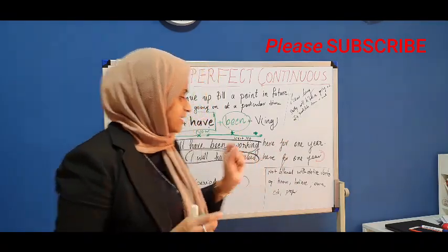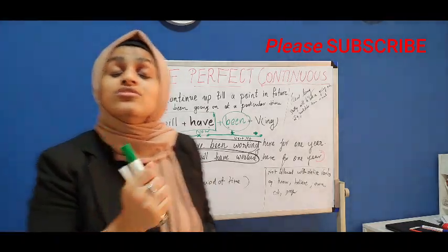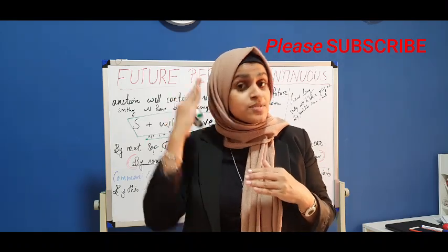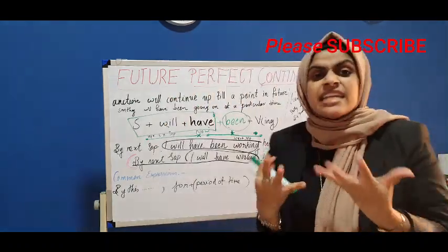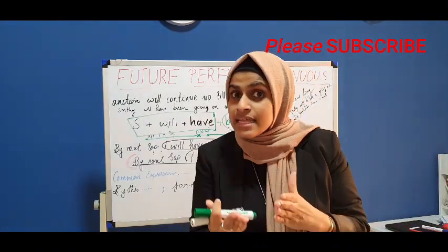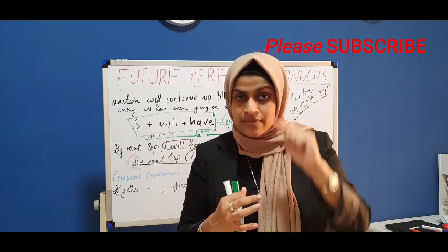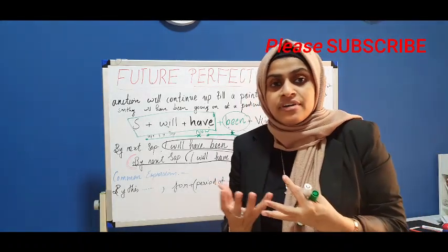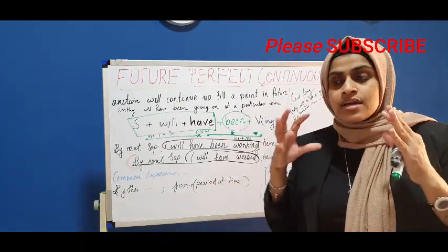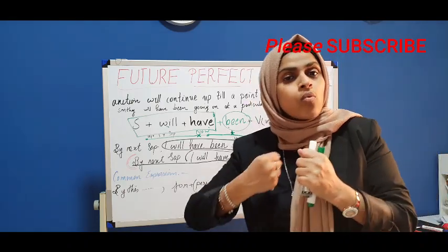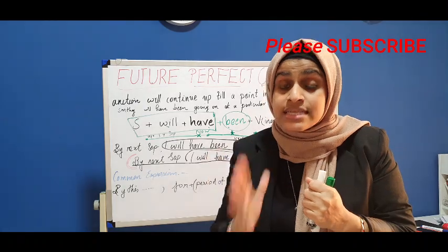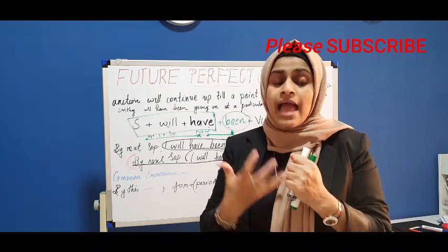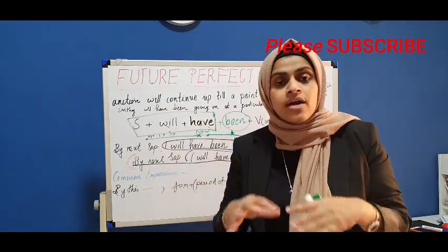One important note: stative verbs. Stative verbs are different from action verbs. We don't normally use stative verbs in continuous tenses. Stative verbs relate to a state of mind — for example: know, believe, own, prefer, love. Action verbs, on the other hand, describe physical actions — running, jumping, walking. We will explain this more in a future episode.